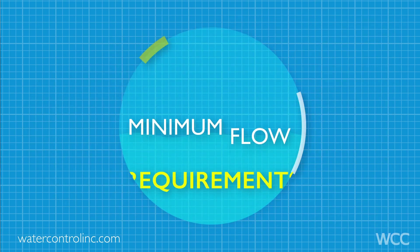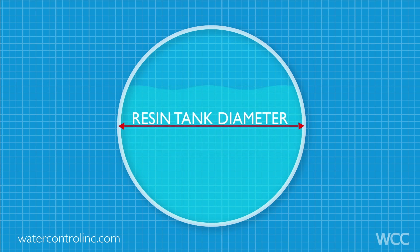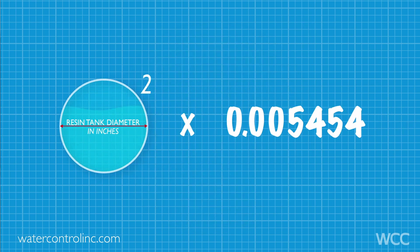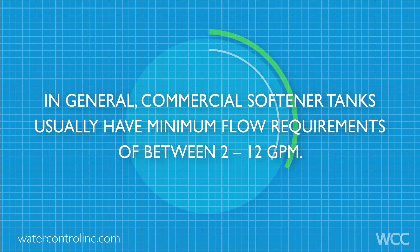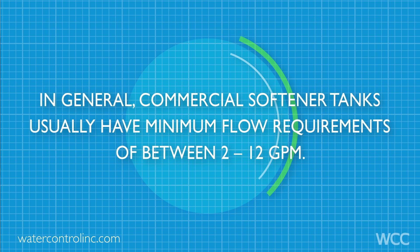Now you need to look at any minimum flow requirements for the softener you selected. The manufacturer should be able to help you calculate this, but it can be approximated in gallons per minute by taking the resin tank diameter in inches, squaring it, and multiplying by a factor of 0.005454. In general, commercial softener tanks usually have a minimum flow rate requirement of between 2 and 12 gallons per minute.